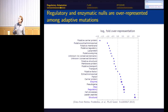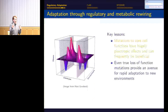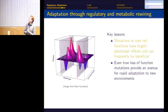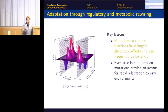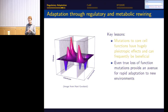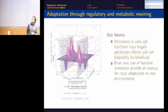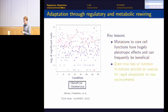The big lessons from the adaptive power of bacterial regulatory networks: first, mutations to core cell functions — like rho — have a huge variety of fitness effects and can be beneficial under many conditions. In recent years, people have appreciated this also applies to RNA polymerase mutations and many other core functions that get mutated in populations evolving under stressful conditions. Even true loss-of-function mutations provide rapid adaptation, because under almost any stressful condition there is some loss-of-function mutation that makes cells better.